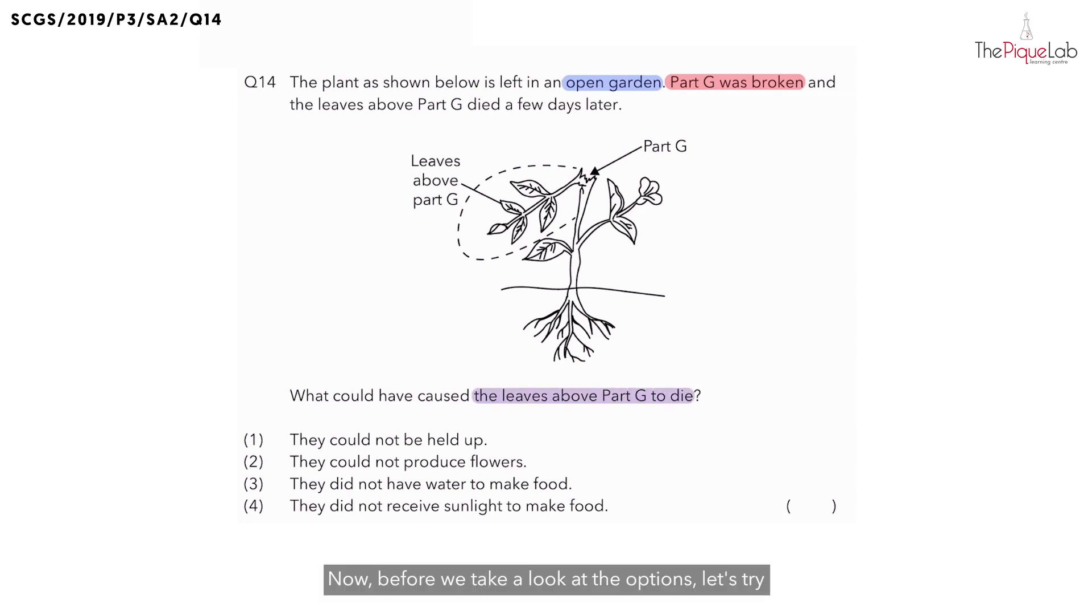Before we take a look at the options, let's try and identify what part G is in the first place. We know that part G is the stem of the plant. And if you look at this diagram, it shows us clearly that the stem was broken. So we need to figure out how come when the stem is broken, this would cause the leaves above part G to die.